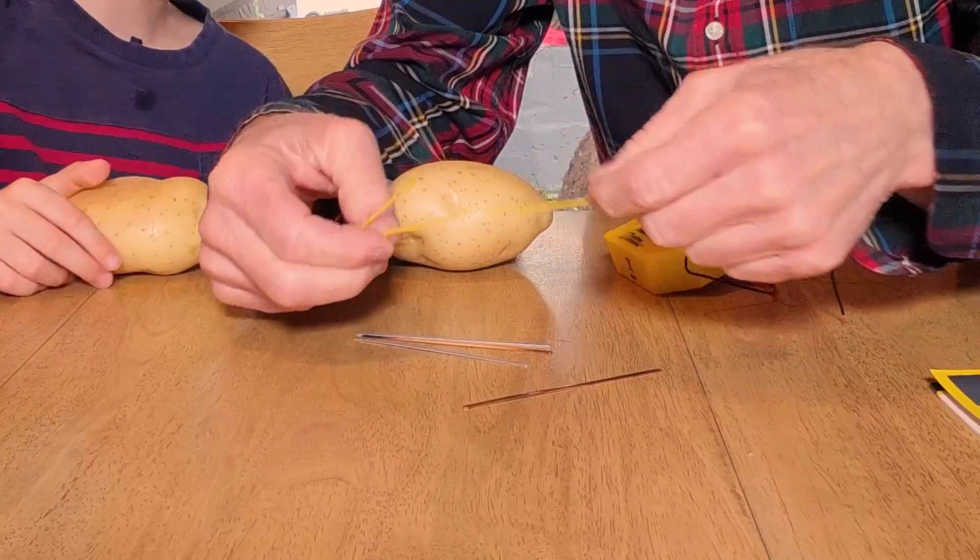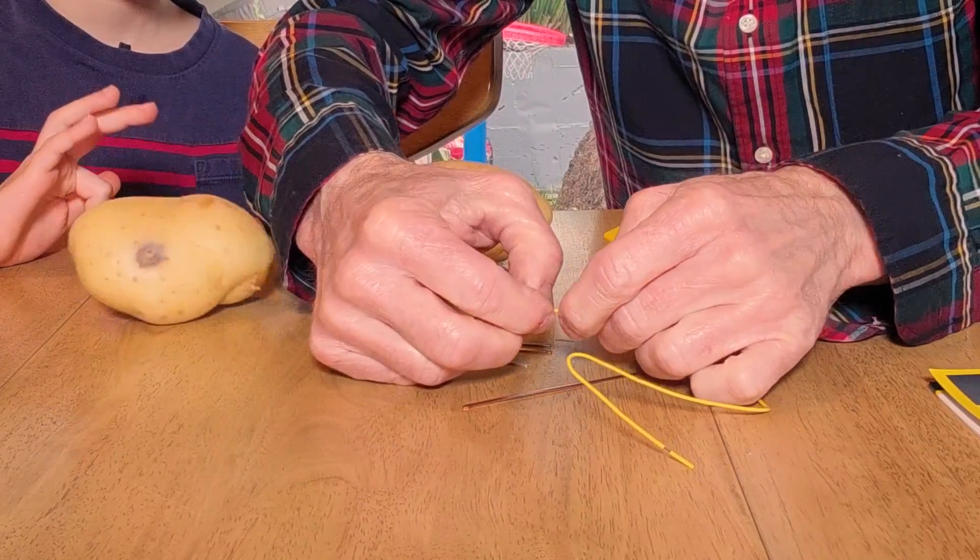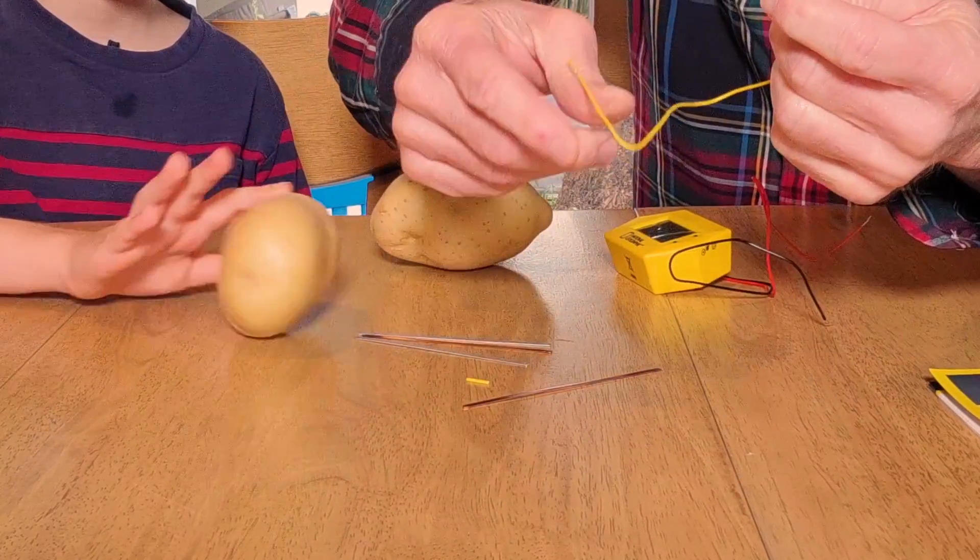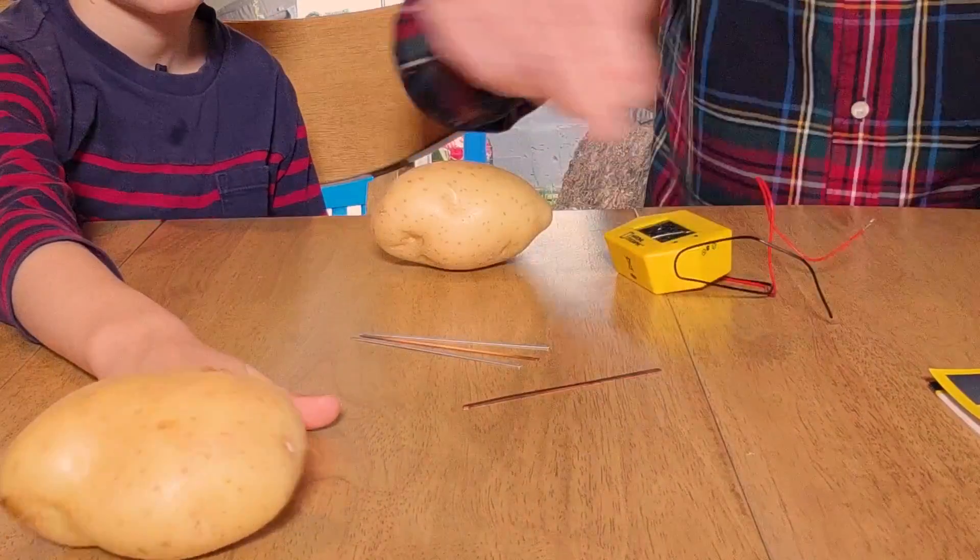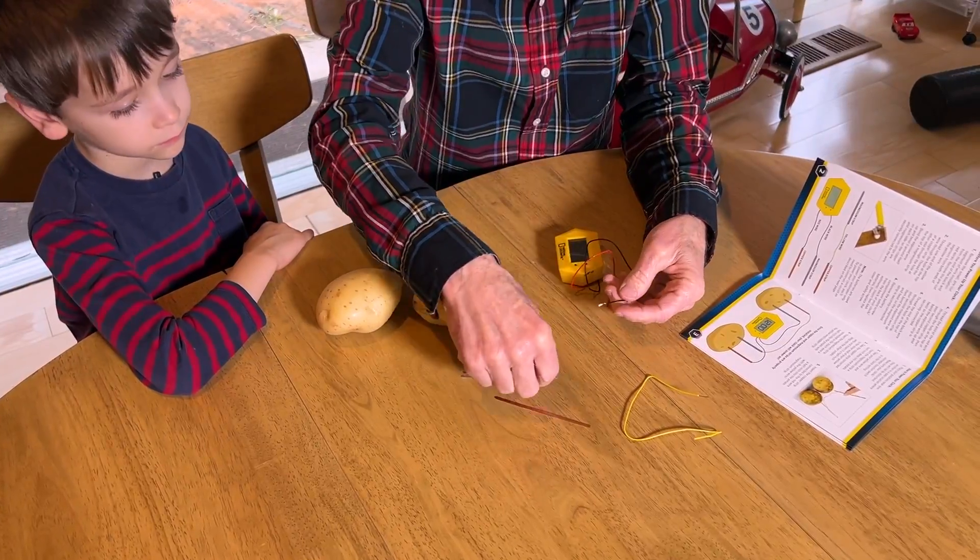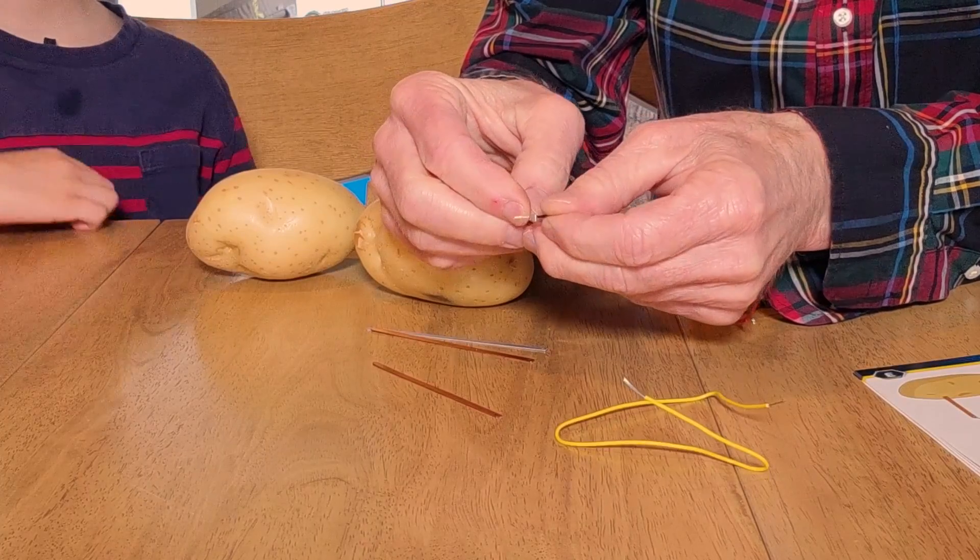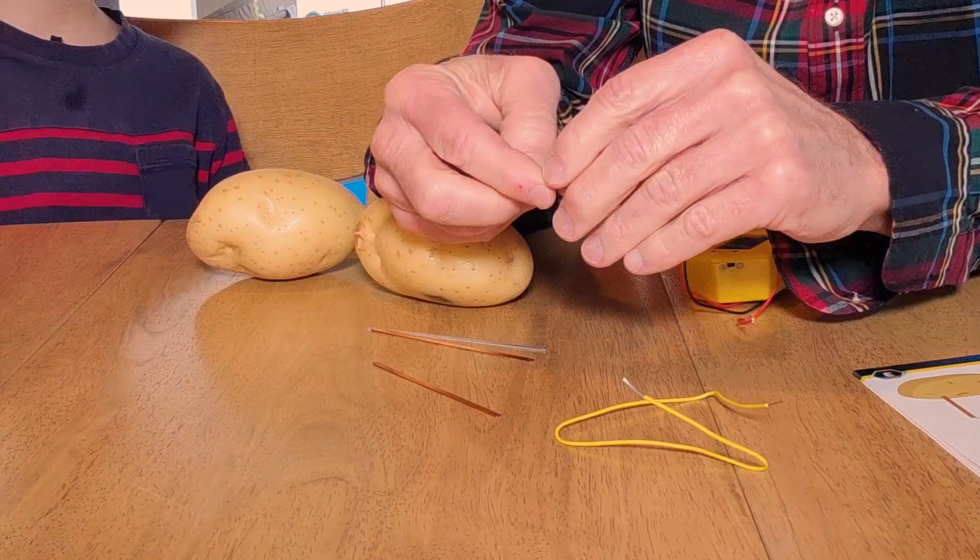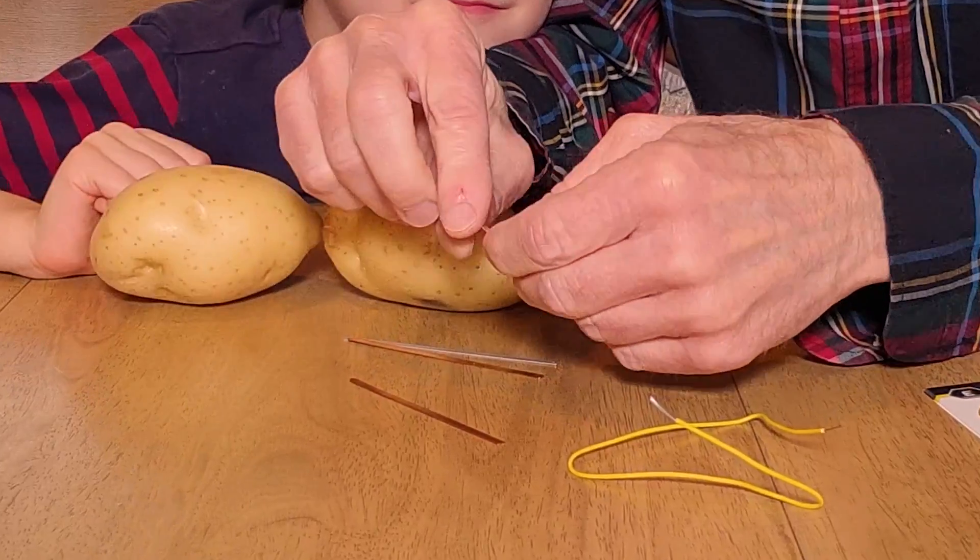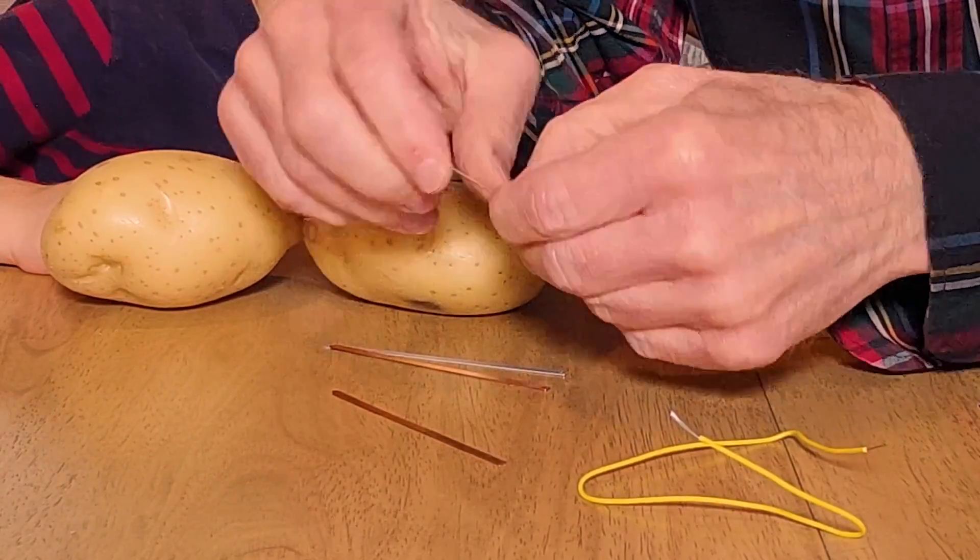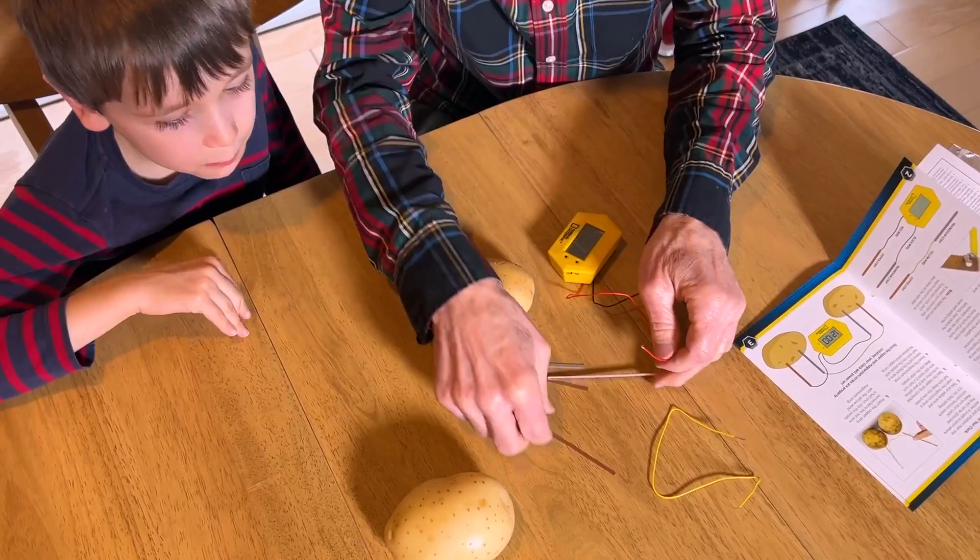We're going to pull the insulation off of this one which is a jumper wire. Basically, zinc is going to go to black. So we're going to first connect our zinc to the black wire, put it through the tiny hole and then try to twist it so that it makes a nice firm connection.